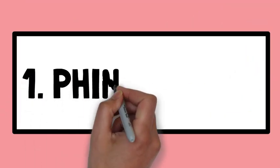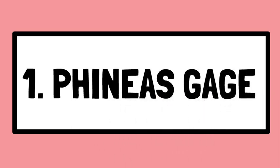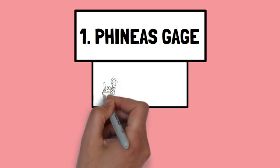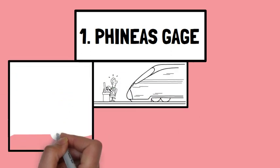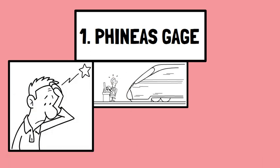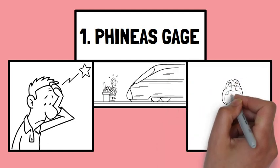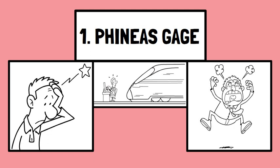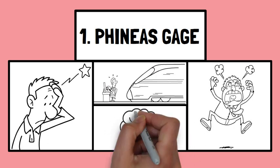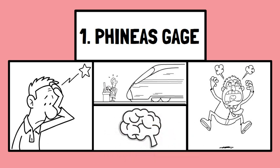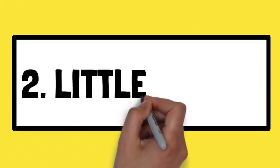Example one: Phineas Gage. Phineas Gage was a railway construction worker who, in 1848, survived a severe head injury that damaged his prefrontal cortex. Following this incident, his personality changed significantly and he became impulsive and aggressive. This case study played a crucial role in differentiating between the functions of different areas of the brain and the impact of head trauma on behavior and personality.